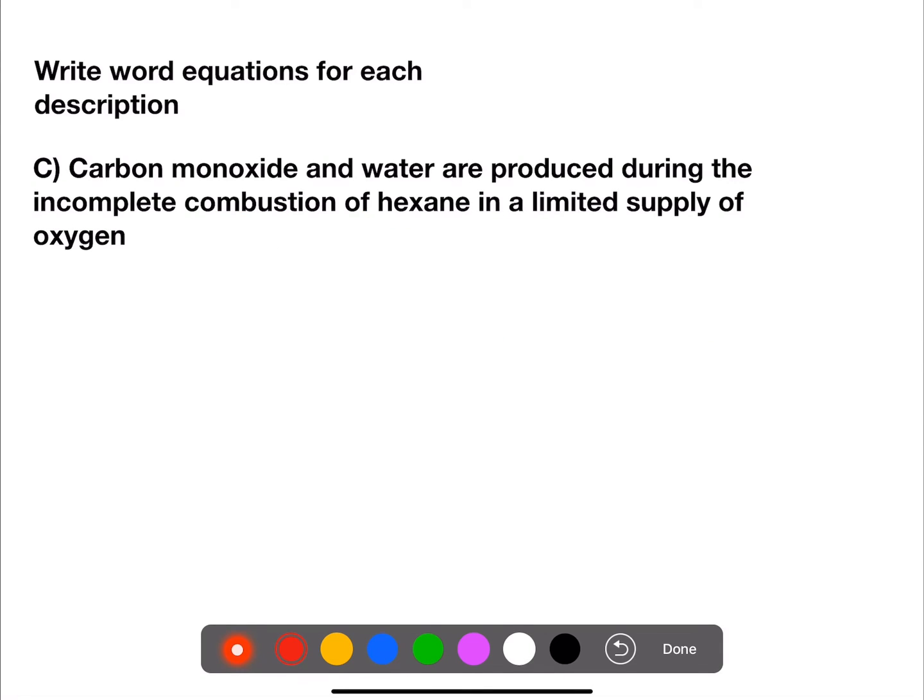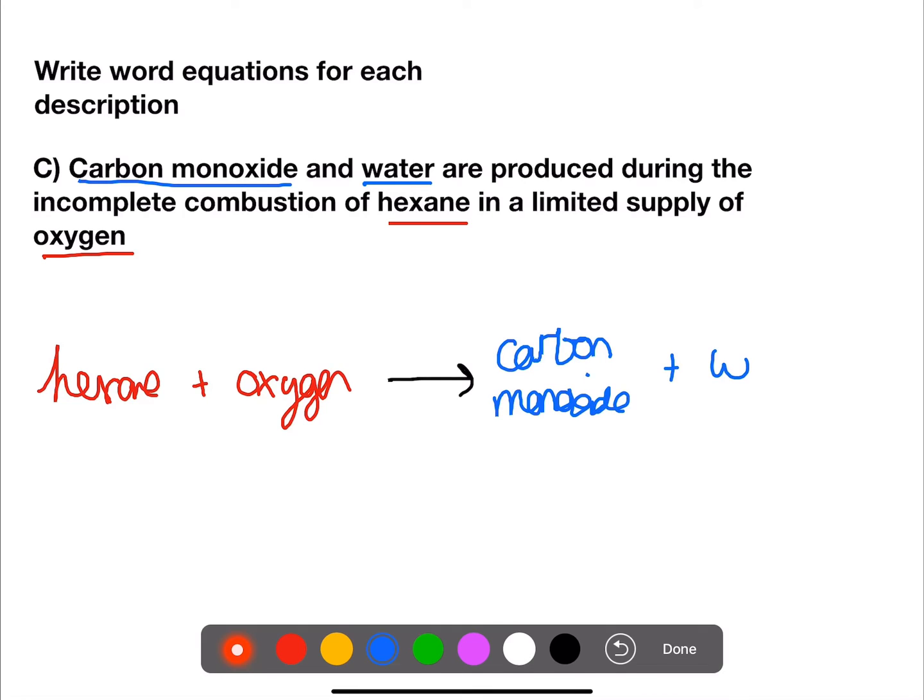Carbon monoxide and water are produced during the incomplete combustion of hexane in a limited supply of oxygen. So carbon monoxide and water are our products. Hexane and oxygen are the reactants. So hexane and oxygen will go on the left. We'll have an arrow. We have carbon monoxide plus water being our products.